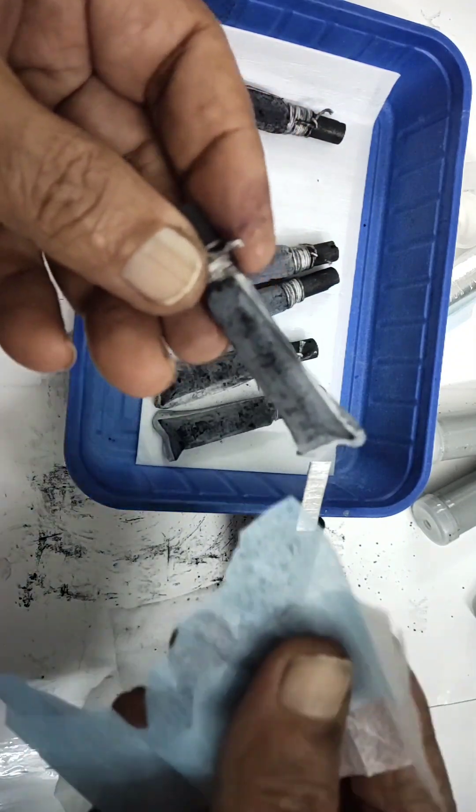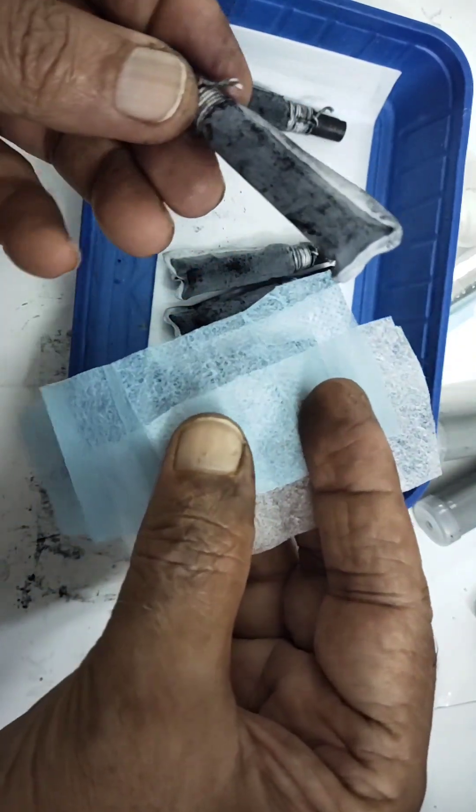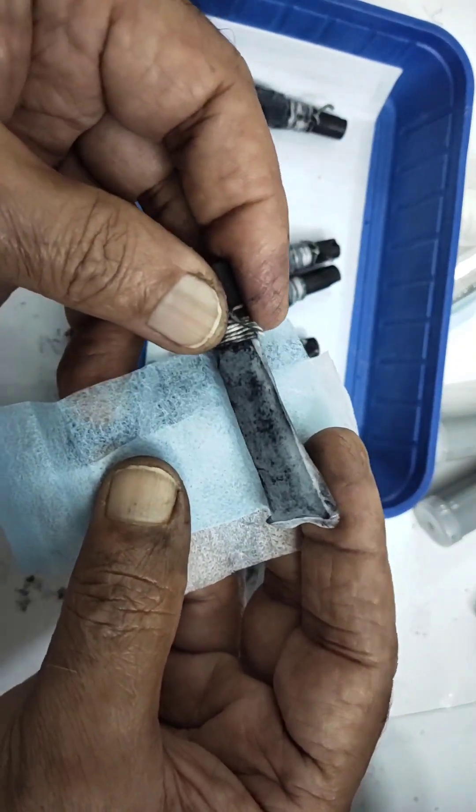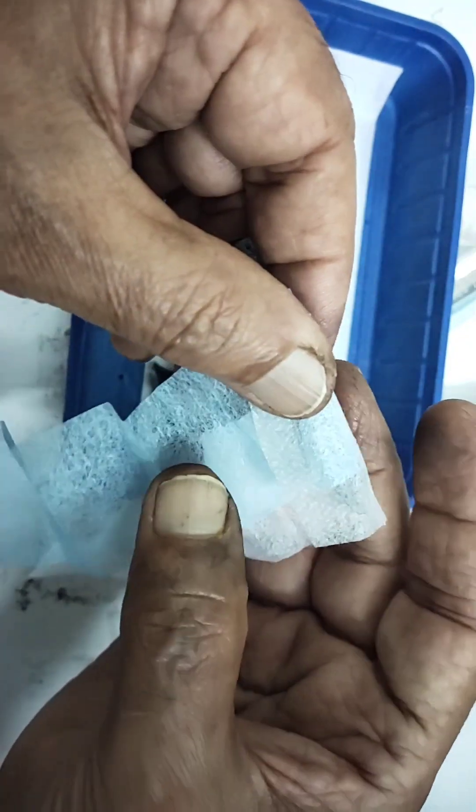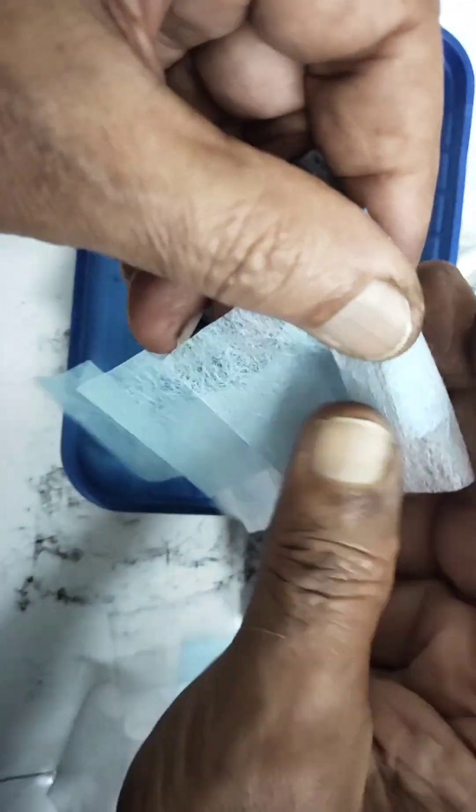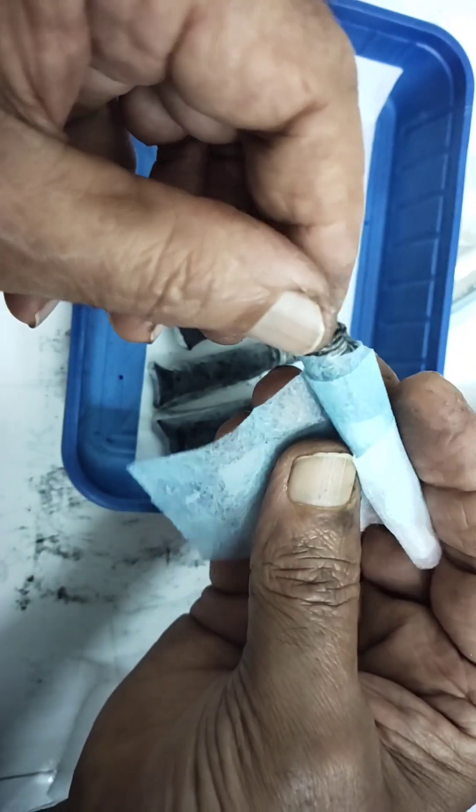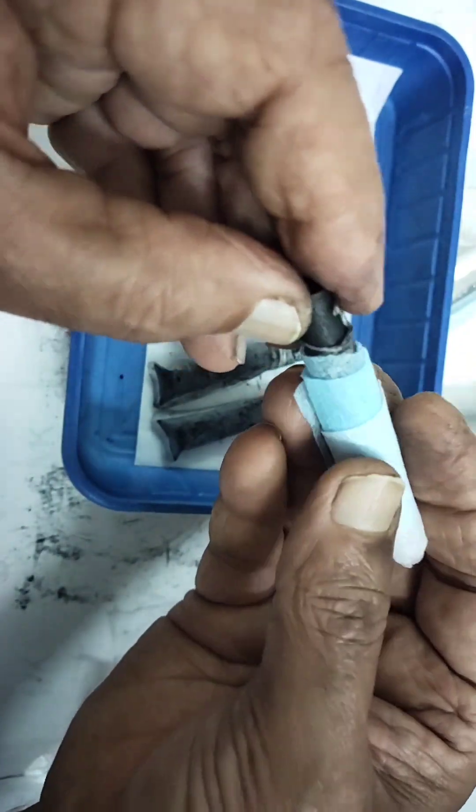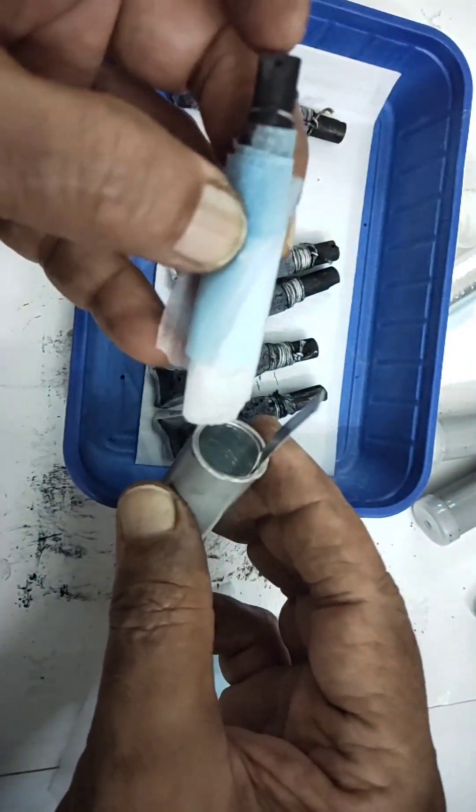I will wrap it with the mask paper, whatever we are using as mask. The bottom also is covered with the filter papers. Just slowly rotate it loosely around the electrode.